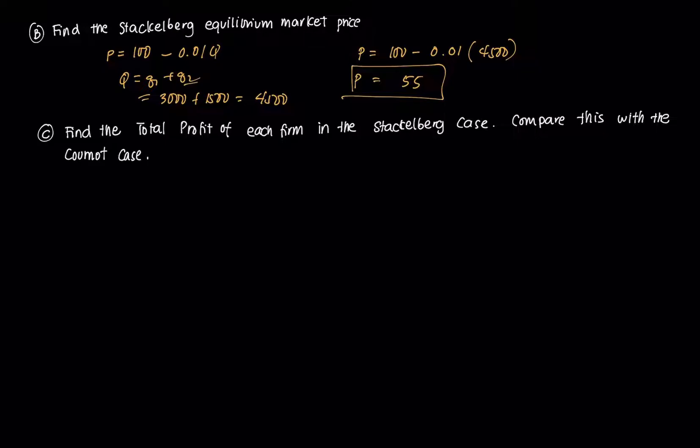Our last question: find the total profit. So for firm one, that's just profit equals revenue one minus cost one. So we just plug in. That's 55 times the quantity 3000 minus 40 times 3000. So this is the marginal cost, this one is the price. Then you multiply it by Q. No fixed cost. And you get 45,000.